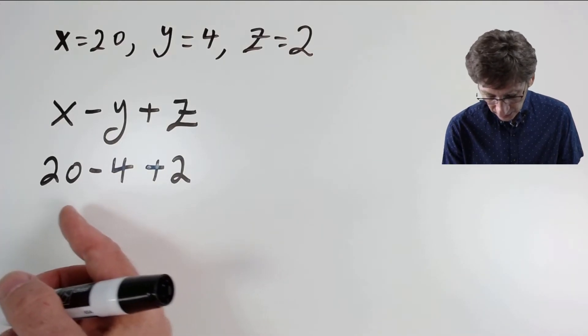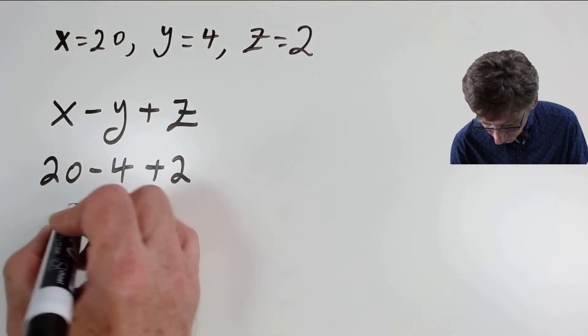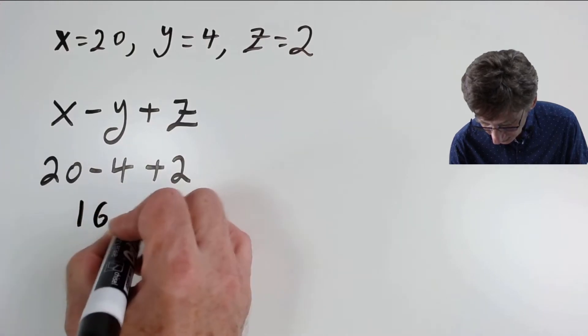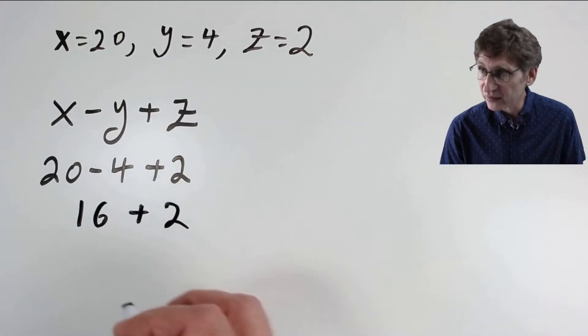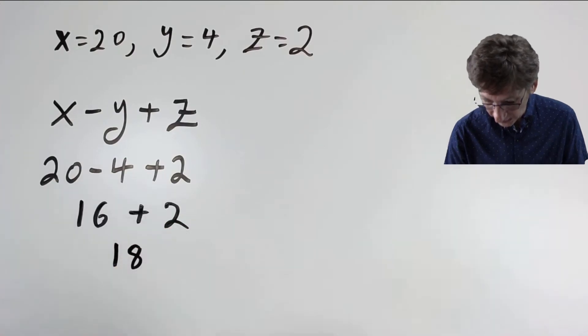First, addition and subtraction from left to right, 20 minus 4 is 16. So then I have 16 plus 2, which is 18.